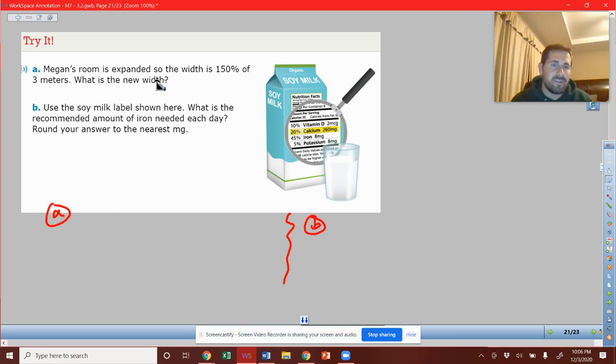So part A, Megan's room is expanded, so the width is 150% of 3 meters. What is the new width?